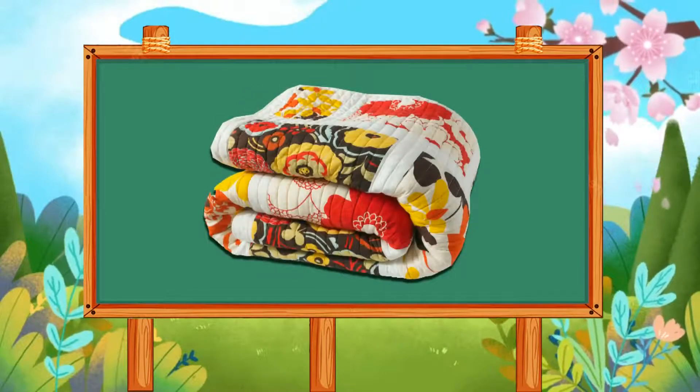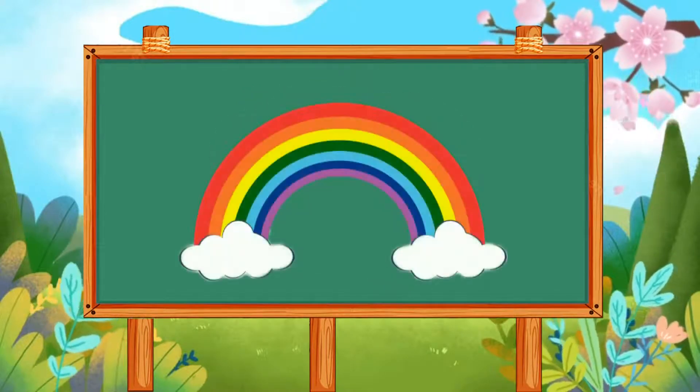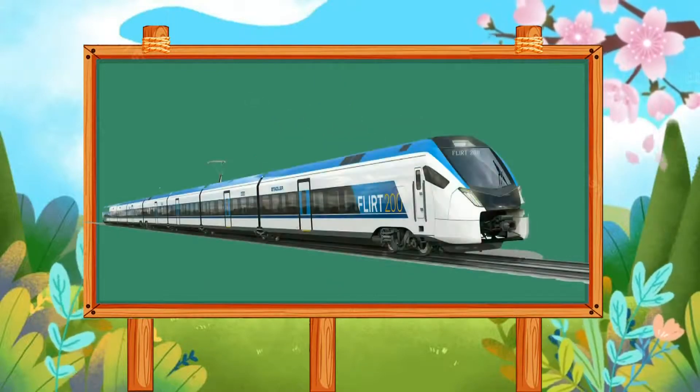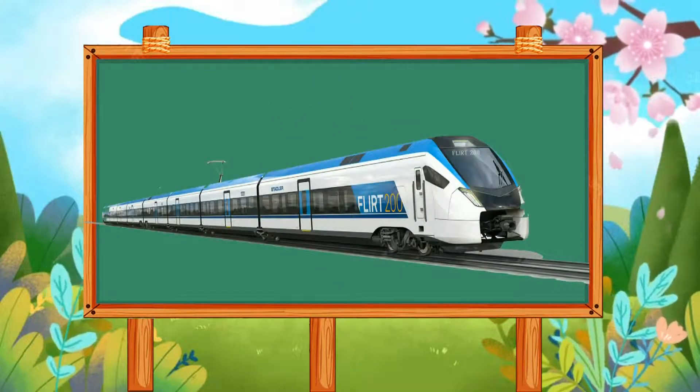Q is for quilt. R is for rainbow. S is for stars. T is for train.